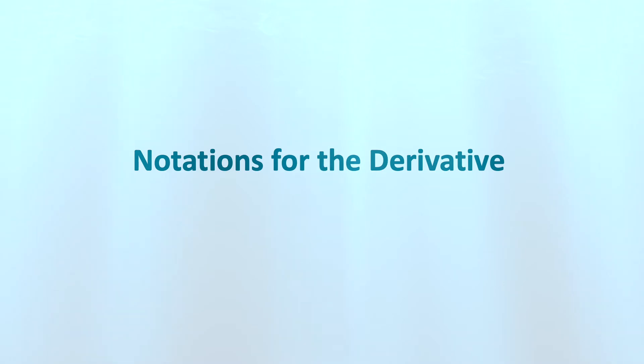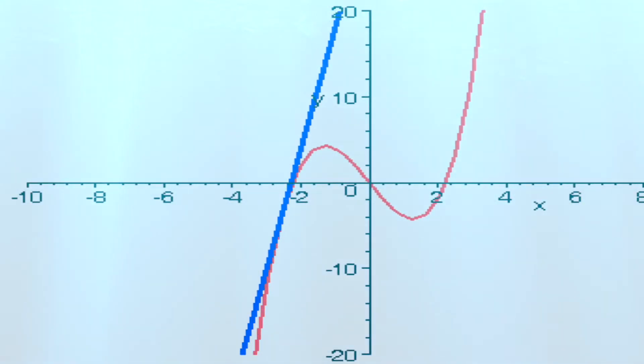Hi, this is Fadi from Russell Hema campus. Today I'm going to take you through various types of notations for the derivative. The derivative of a function is itself a function representing the slope of the tangent line to the original function.